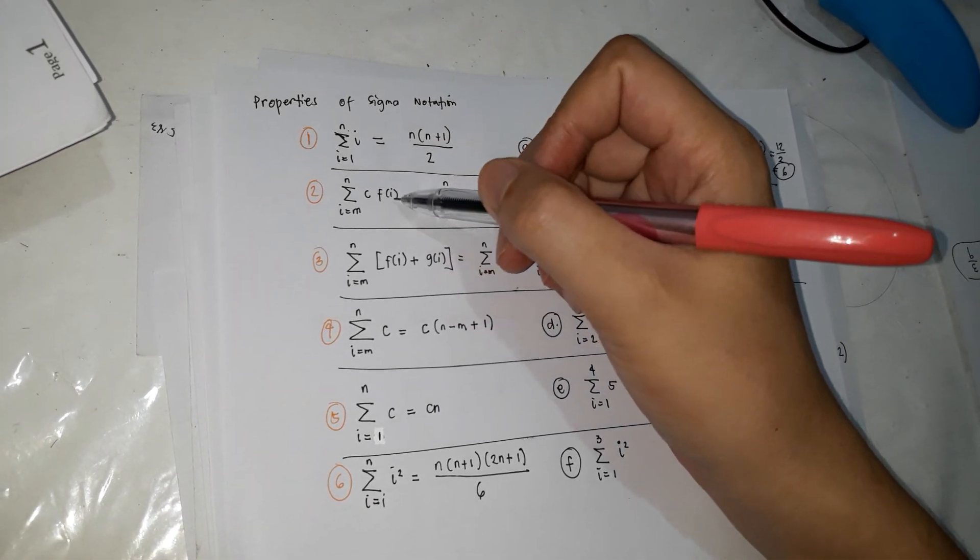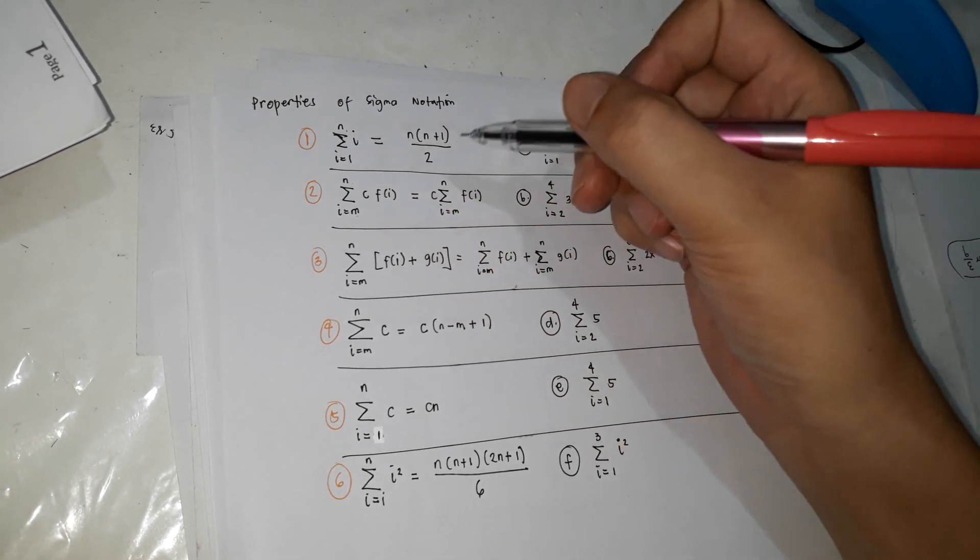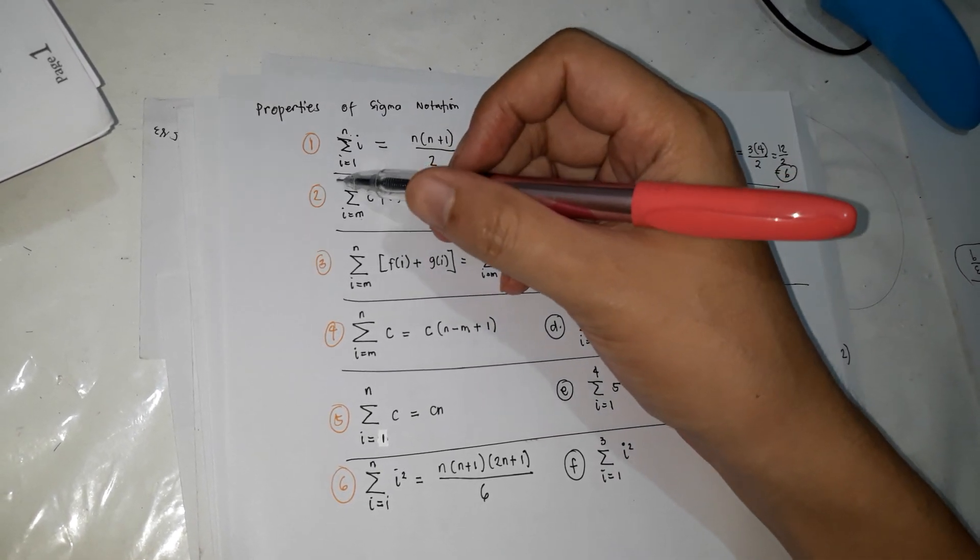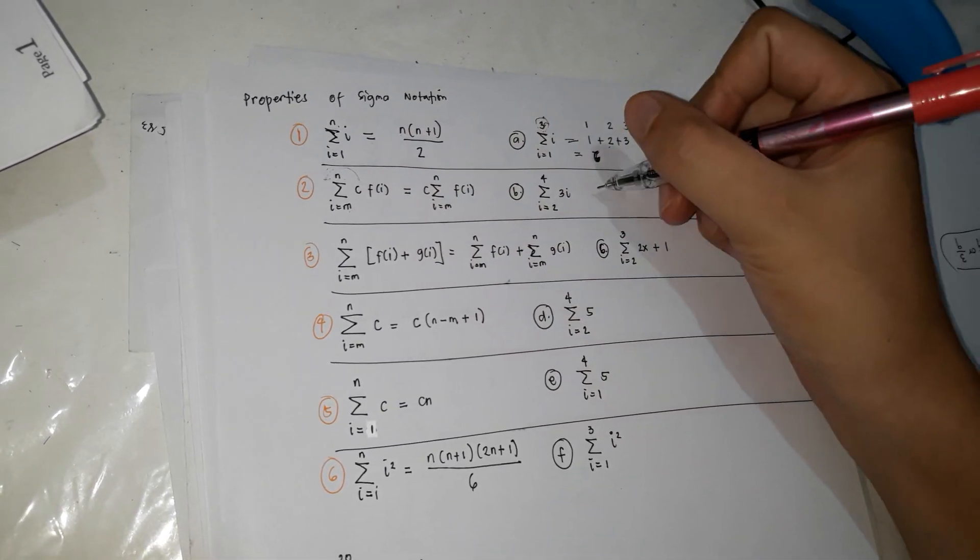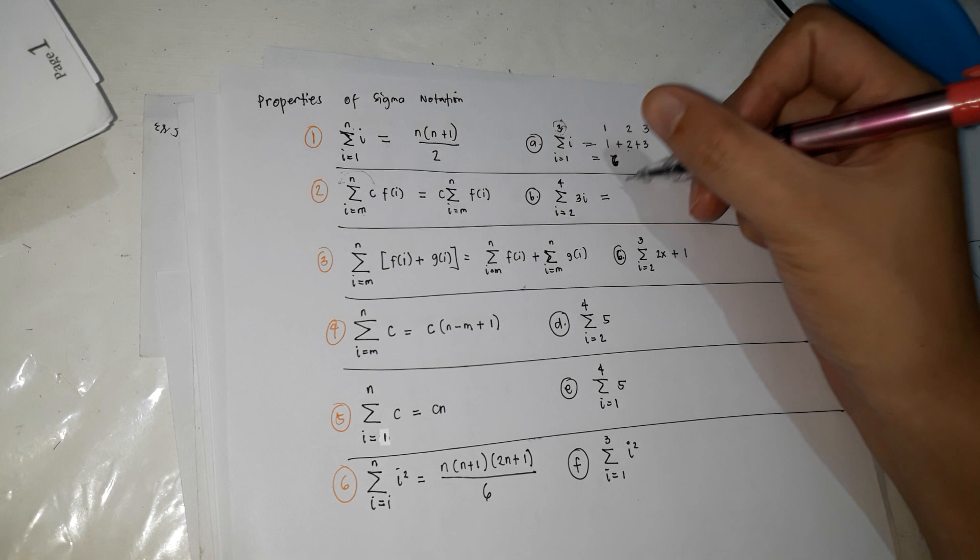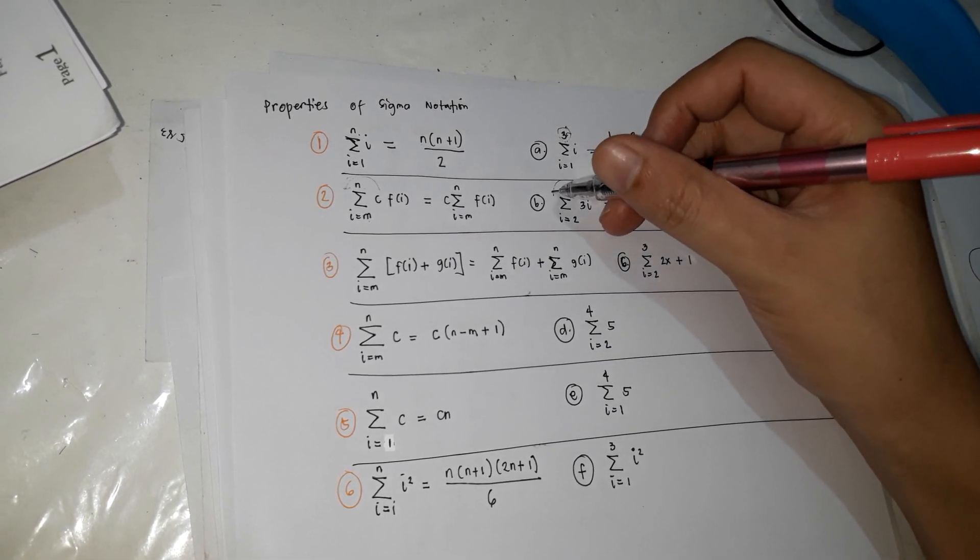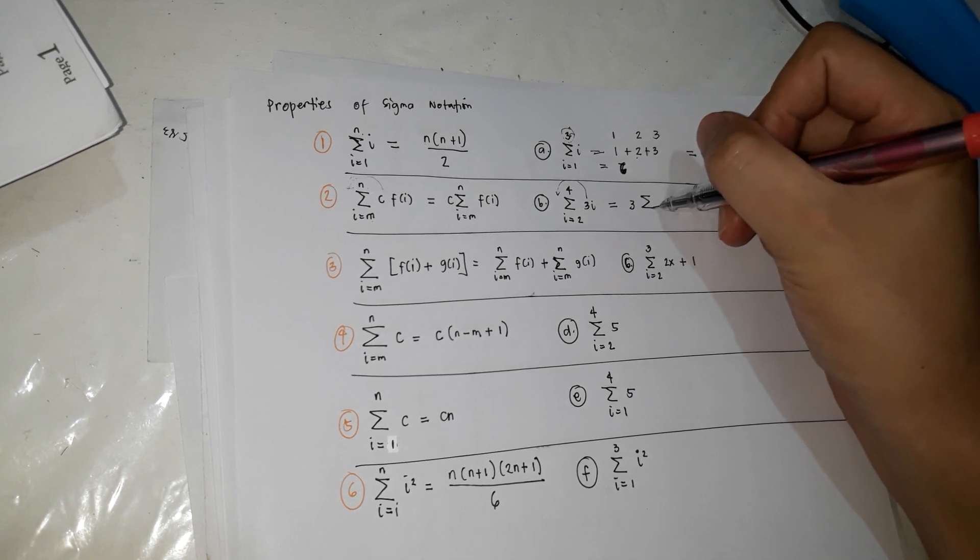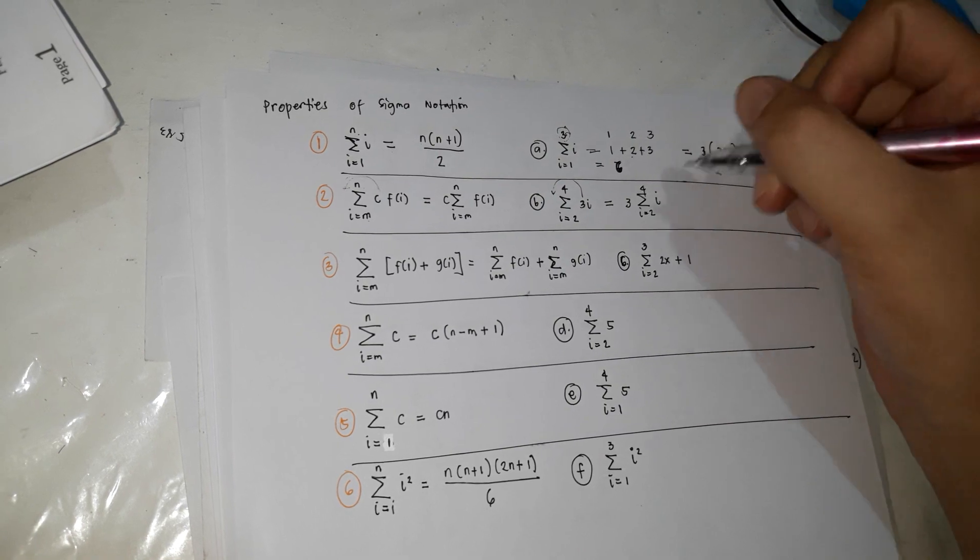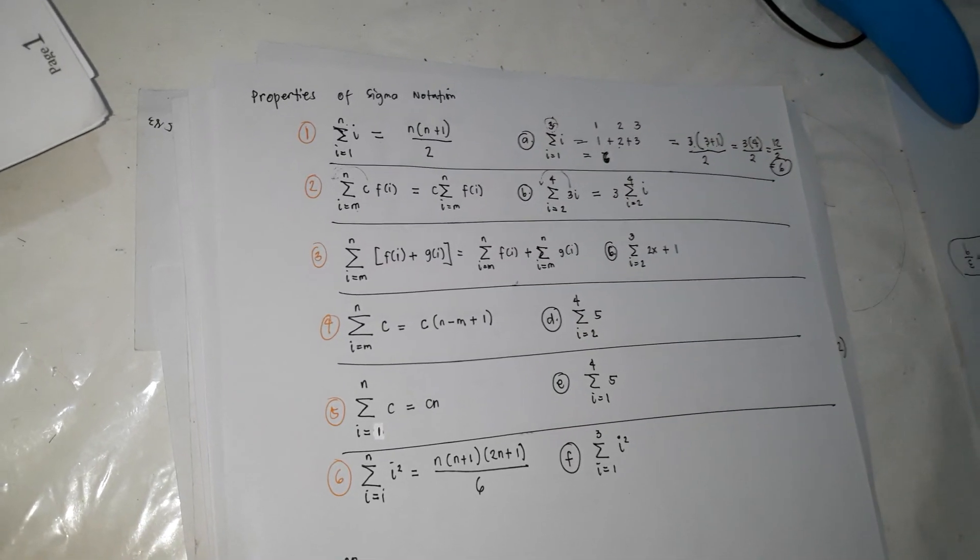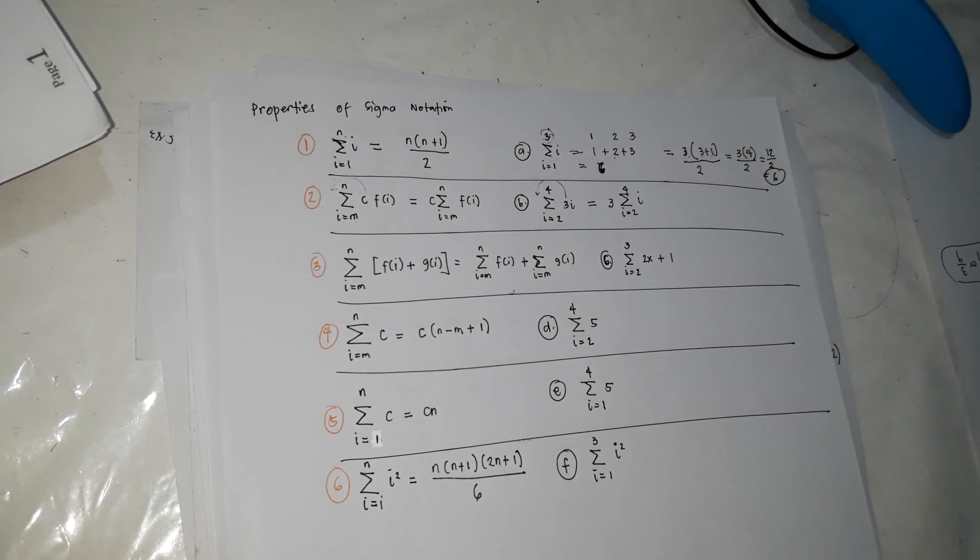So another property is this one. So summation of C times F of I, from M to N. So gawin mo lang diyan, ilabas mo lang yung C. Itong 3, ilalagay mo na lang sya before ng sigma notation or summation I is equal to 2 for I. So ito pala syang 3I, equal pala sya sa 3 summation of I.